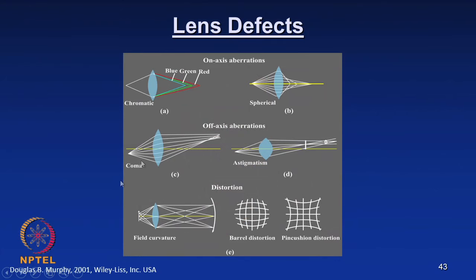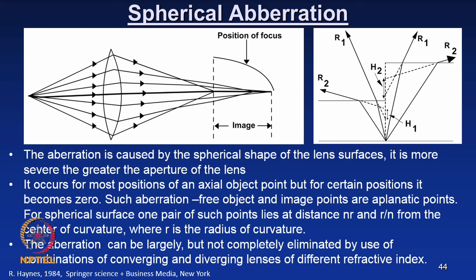Lens defects are basically of two types: one is on-axis aberrations, the other one is off-axis aberrations, and then we have distortion which is also going to impair the quality of the images. I started off describing the first and very important defect — spherical aberration — yesterday. So let us look back at this defect again.